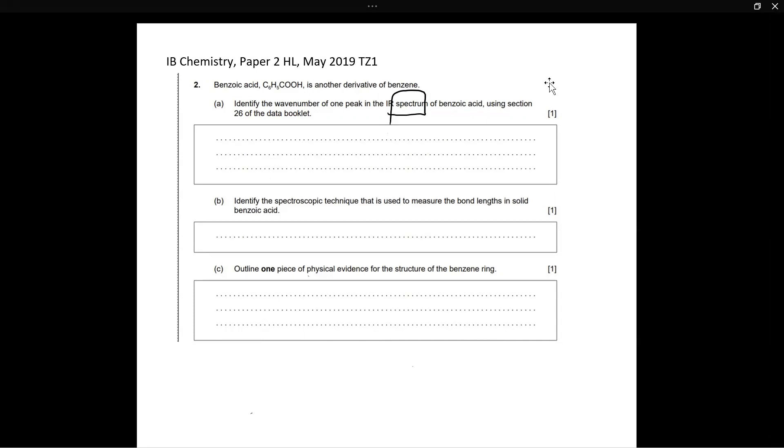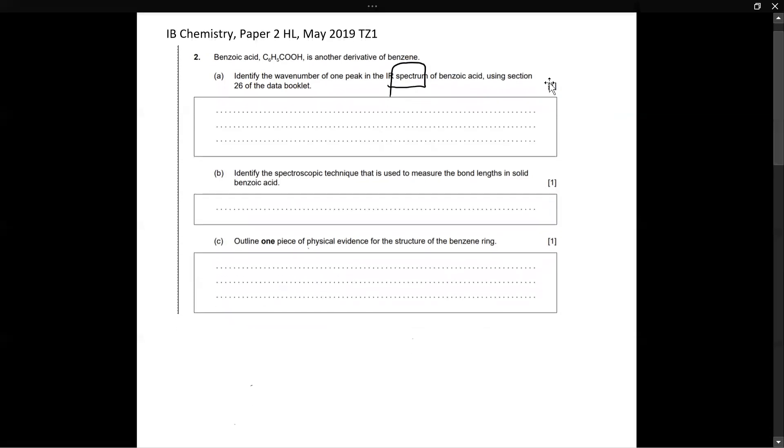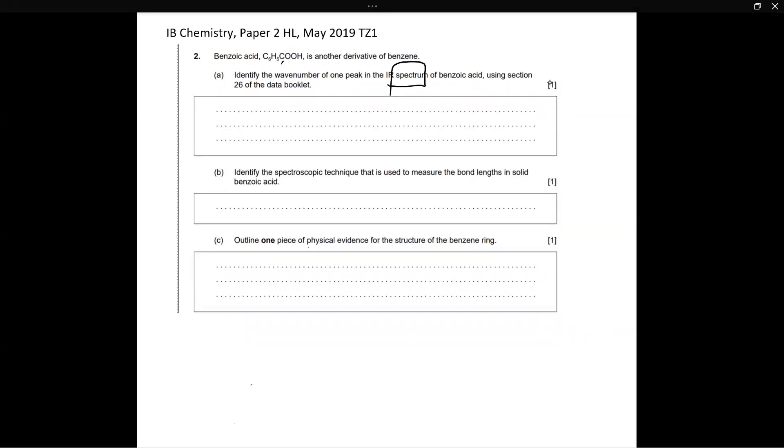For benzoic acid, we know from the name that it's an acid, and we can see clearly from this that there's a carboxyl group present. So this carboxylate group over here is the functional group for benzoic acid, and this is what we're going to focus on.